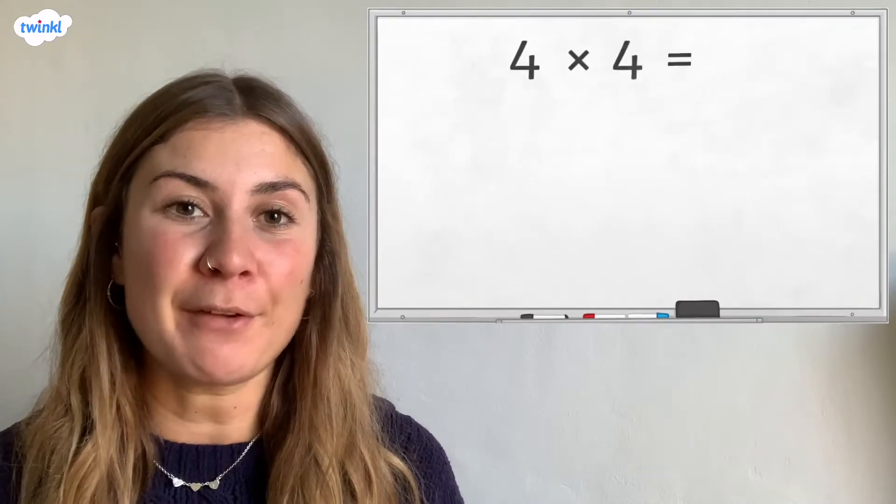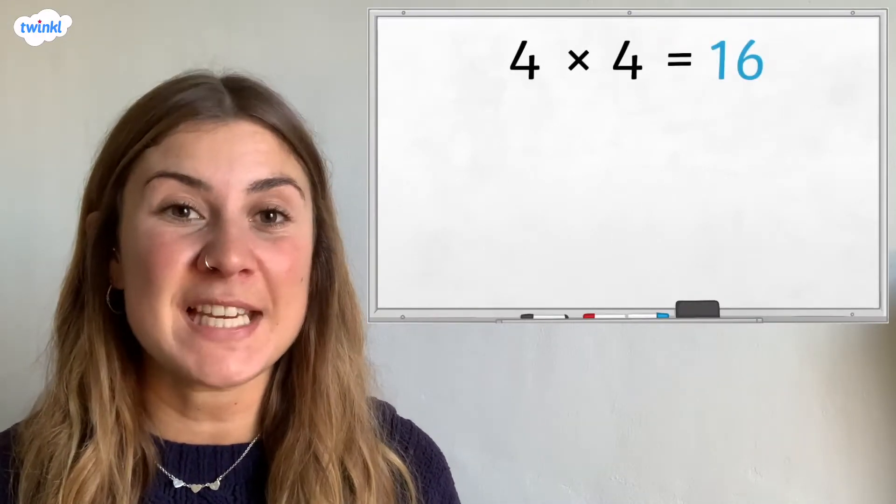For example, 4 multiplied by 4 equals 16, so 16 is a square number.